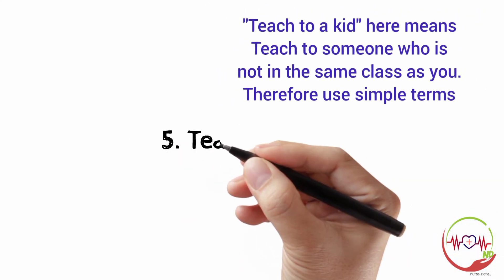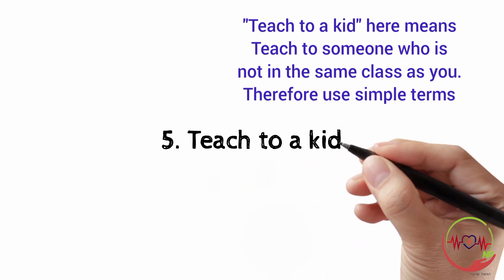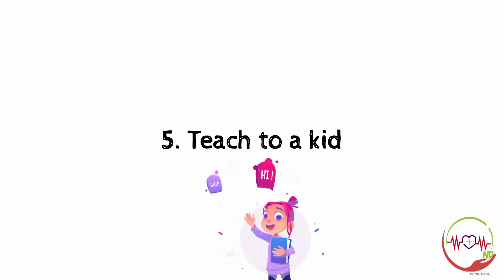Now tip number five, teach to a kid. Now teach to a kid here simply means that make it simple in simplest form to someone who is not in your class. Make sure the person is able to understand. If you're able to do that, you are good to go. You can actually remember.